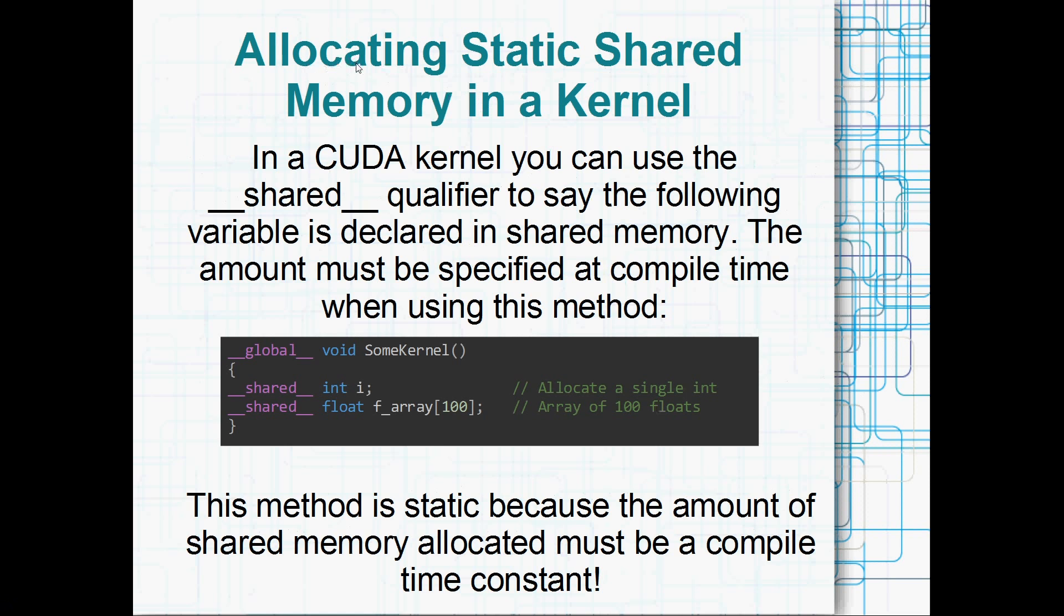Okay, there's a couple of ways to allocate shared memory, and we'll go through them here. So there's static allocation of shared memory, and there's also dynamic allocation of shared memory. Static is a little bit simpler, we'll go through that first. In a CUDA kernel, you can use the __shared__ qualifier beside a variable to say that the following variable is shared amongst the threads of the block. And the amount has to be specified at compile time, so it's got to be a compile time constant.